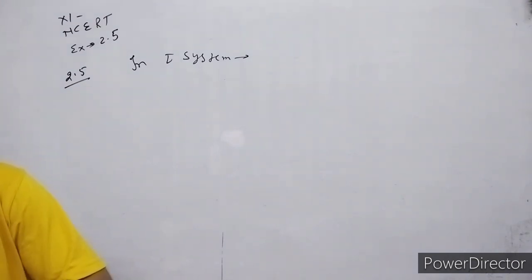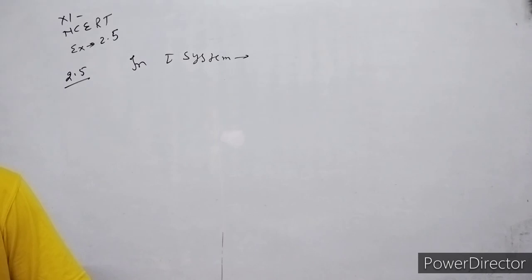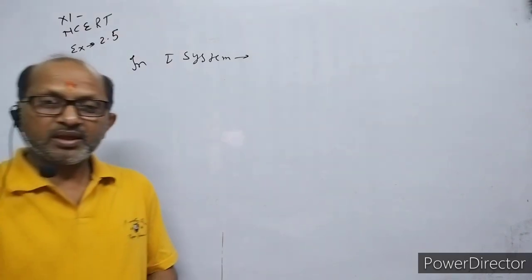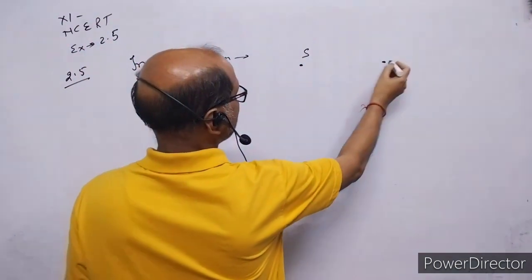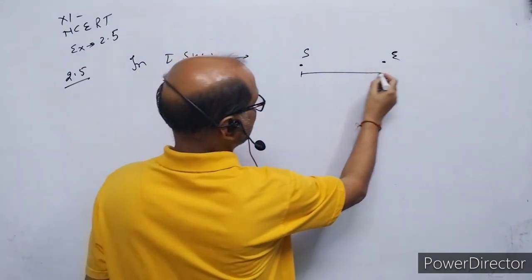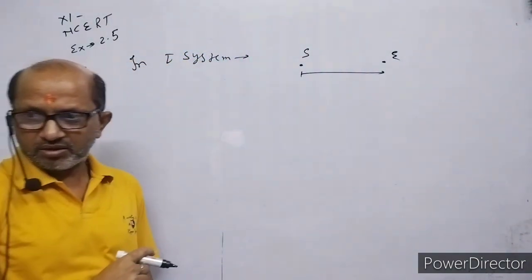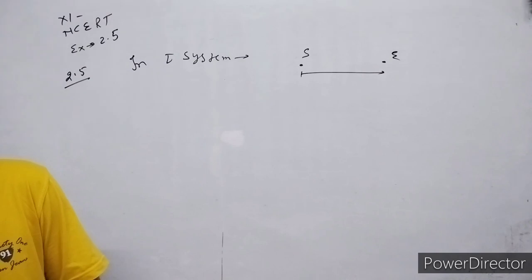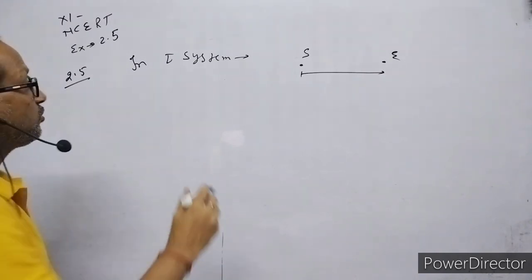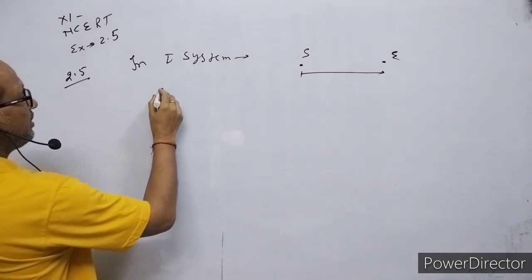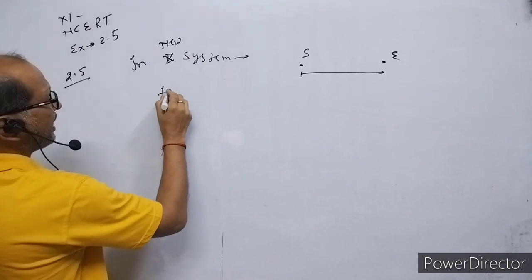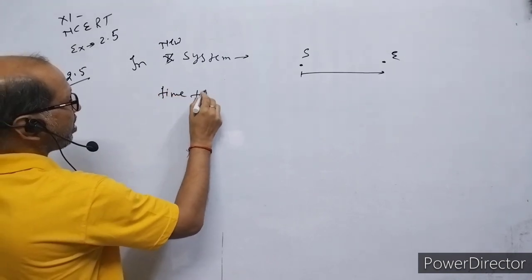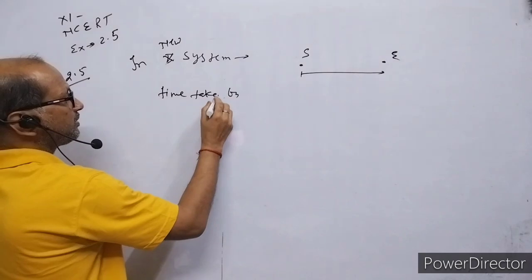The distance between Earth and Sun is such that light takes 8 minutes and 20 seconds to cover it. You can understand: this is the Sun, and this is the Earth. The light travels from the Sun to reach the Earth. Time taken by light in the new system is 8 minutes and 20 seconds.